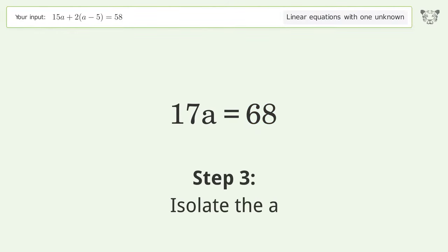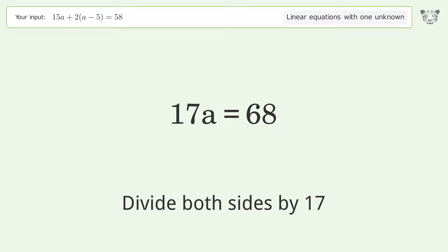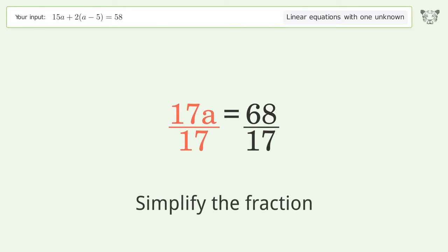Isolate the a. Divide both sides by 17. Simplify the fraction.